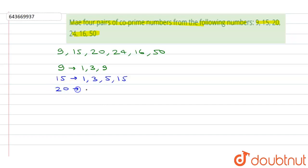Factors of 20 are 1, 2, 4, 5, 10 and 20.